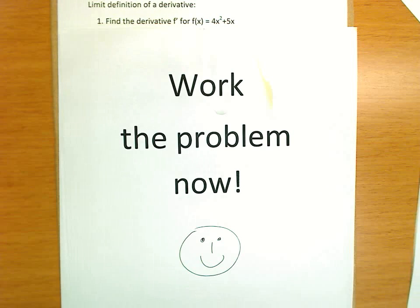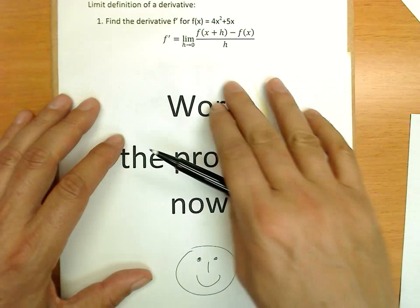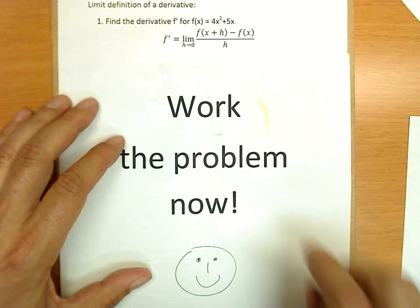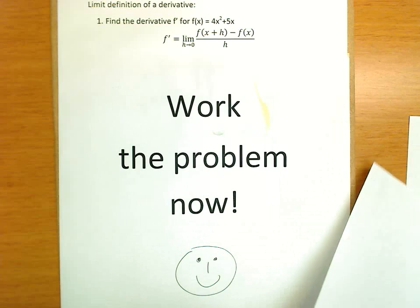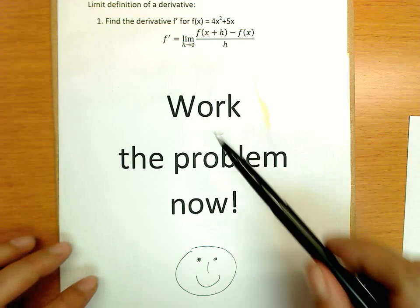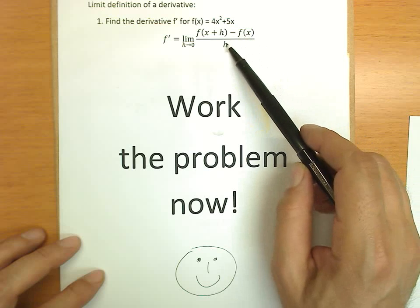Okay, so let's look through our solution. First thing we're going to do is write down the limit definition of a derivative. You're not going to really do any work at this step, just simply write down the definition. f' is equal to the limit as h goes to 0 of [f(x + h) - f(x)] / h.